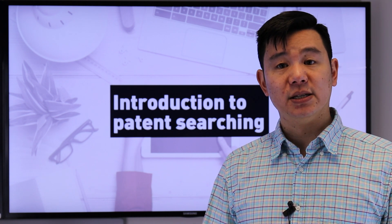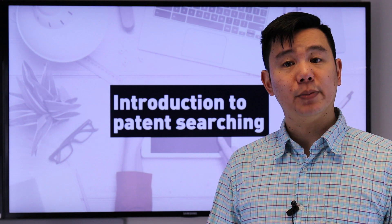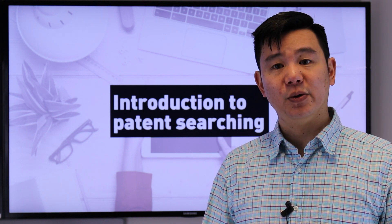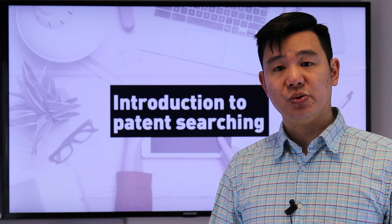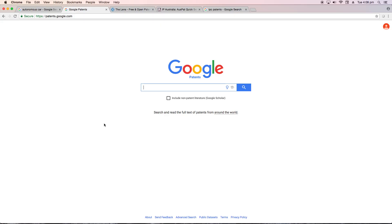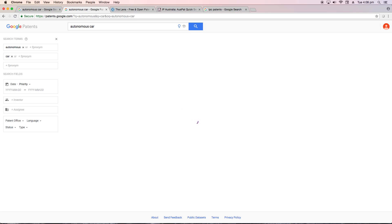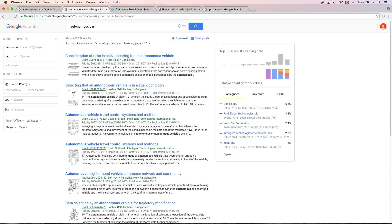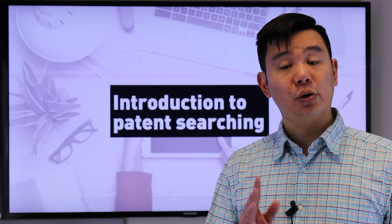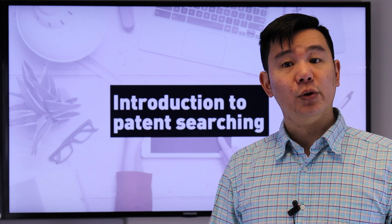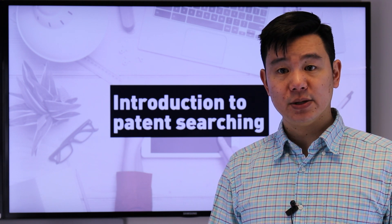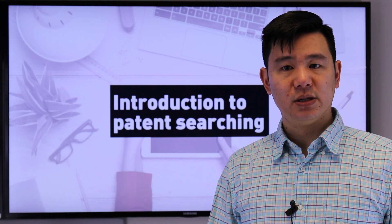When you're happy that your invention isn't already being made or sold by someone else, it's time to focus your searching on patent databases. One of the easiest tools you can use is Google Patents. Google Patents has the same basic interface as the normal Google search, so all it needs is a few keywords to begin. One thing to keep in mind is that Google Patents will not include results from IP Australia's database. So if you're interested in finding Australian-based results, then Google Patents isn't going to be the option for you.